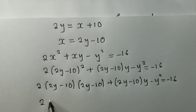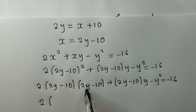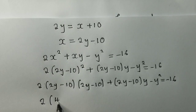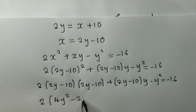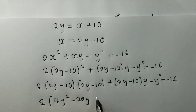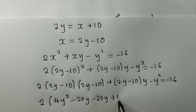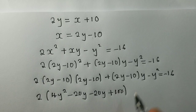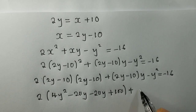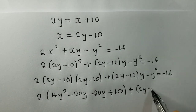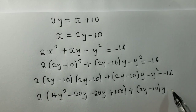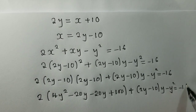We are going to get a 2 there. When you multiply this bracket out, it will give us 4Y², then negative 20Y, then negative 20Y, then positive 100. And then we say plus what we have right here: (2Y minus 10) times Y, minus Y² is equal to negative 16.